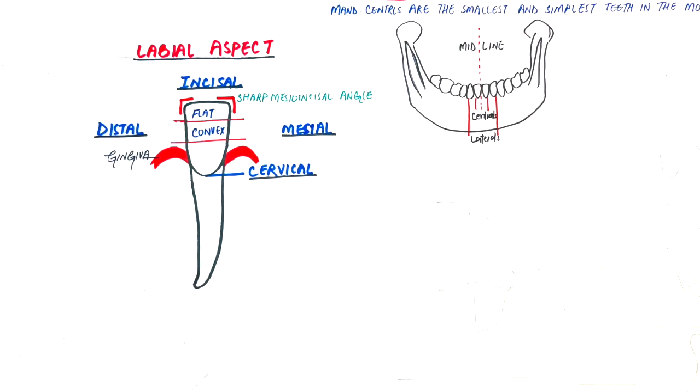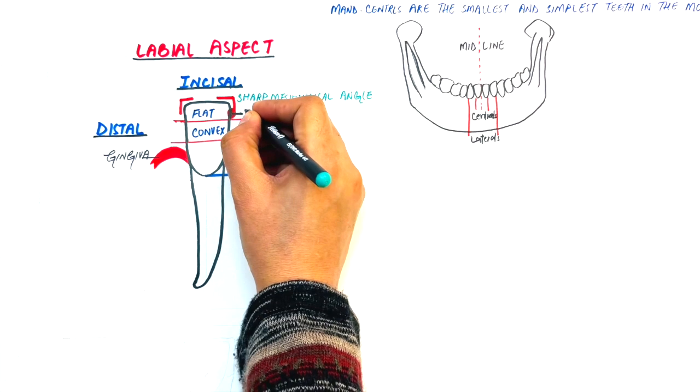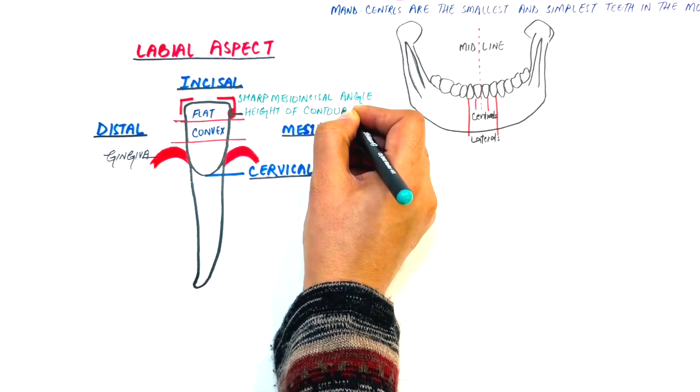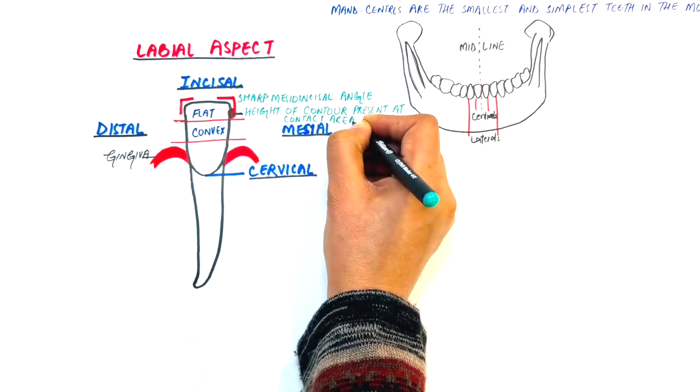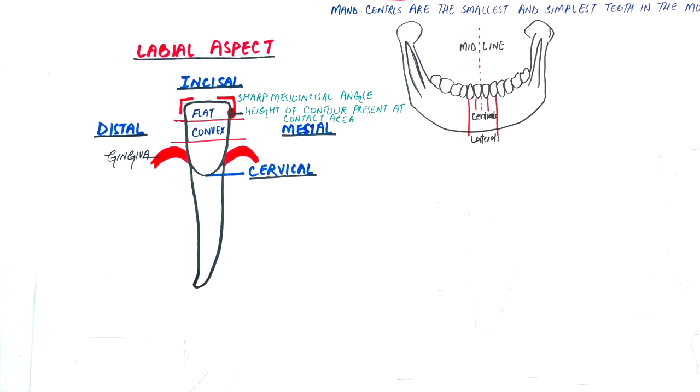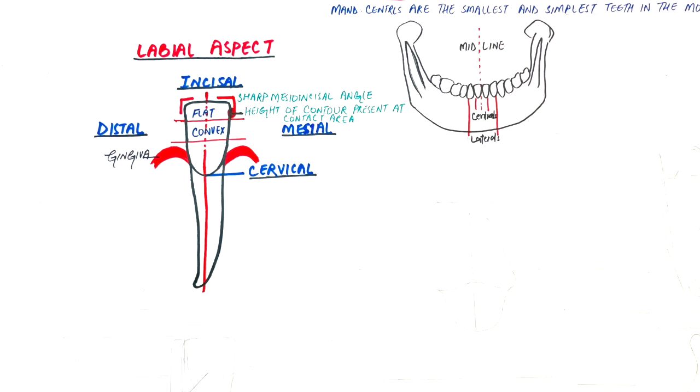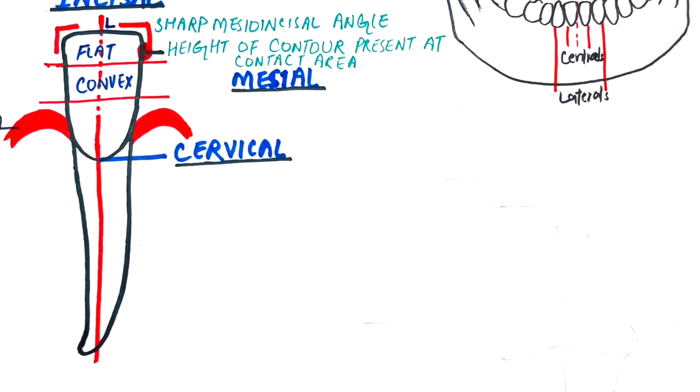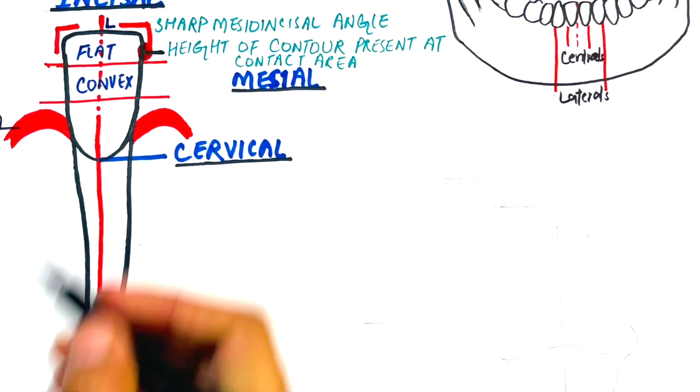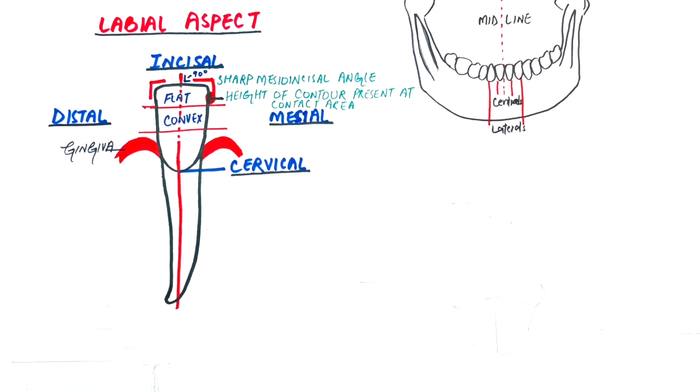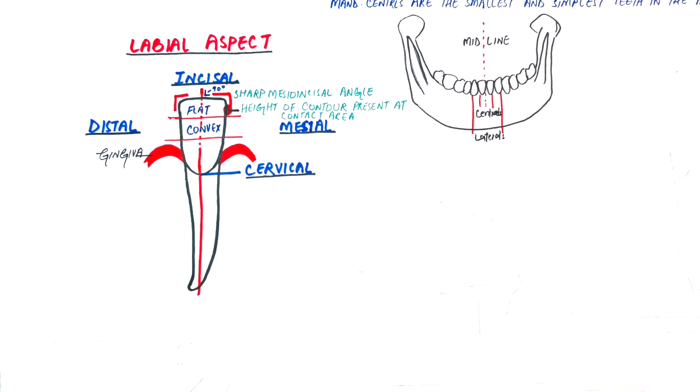The height of contour, which is the highest point of curvature, is located at the contact area near the incisal third. The incisal outline is straight and is approximately at a right angle to the long axis of the tooth. The root ends at a small pointed taper which usually bends slightly to the distal.